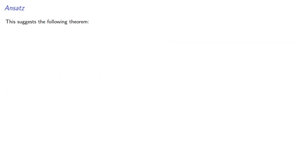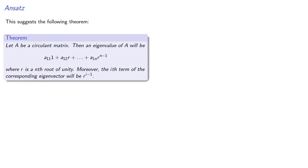This suggests the following theorem. Let A be a circulant matrix, then an eigenvalue of A will be where r is an nth root of unity and the coefficients are the terms of the first row. Moreover, the ith term of the corresponding eigenvector will be r to power i minus 1.